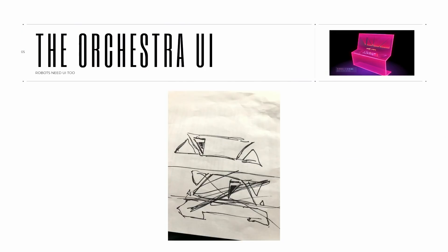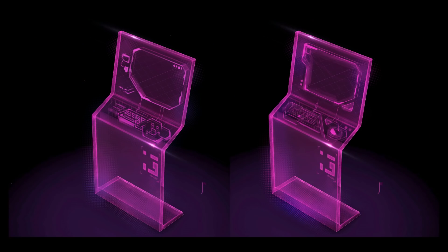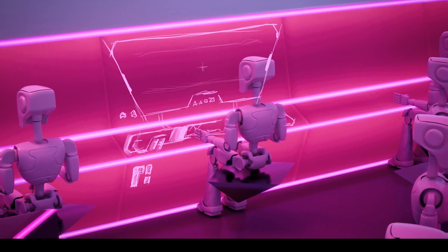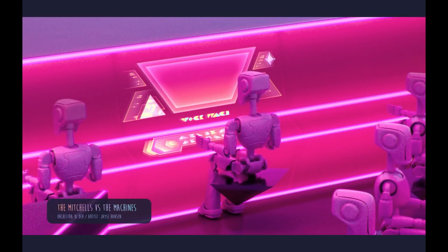Starting with a sketch — I always tell myself, free yourself to draw badly at first. It beats starting with a blank page. After scribbling, I'll go into Procreate and start sketching in a little more detail. And instead of lines, I started experimenting with gradients to be the shape language — more like a texture than line work to define the UI, which I'd never really seen done before.